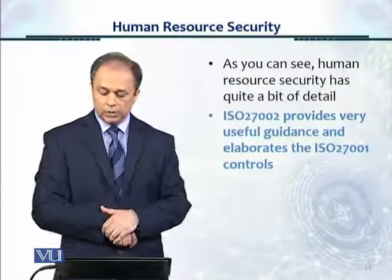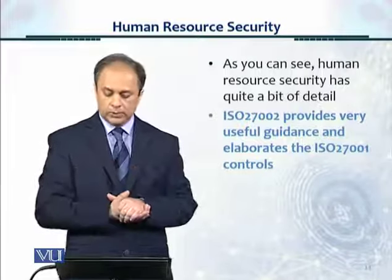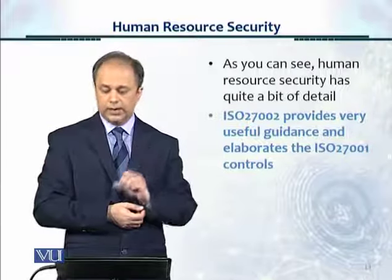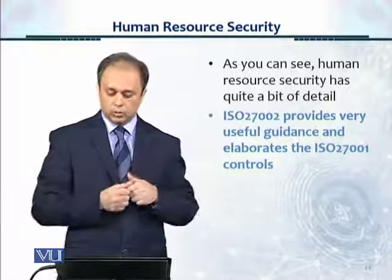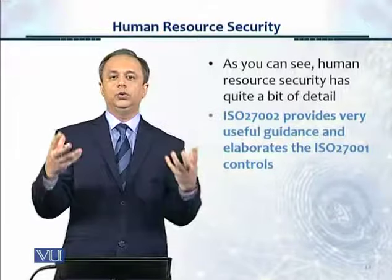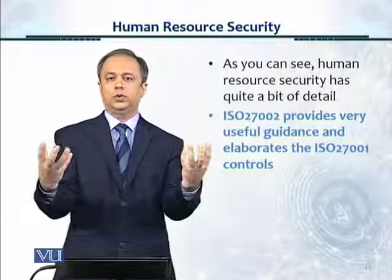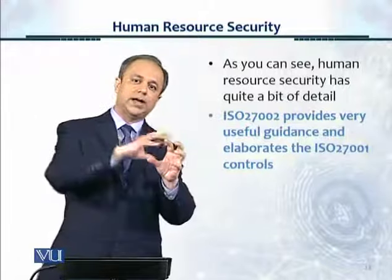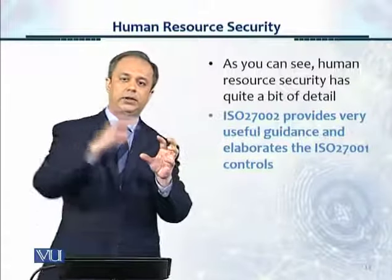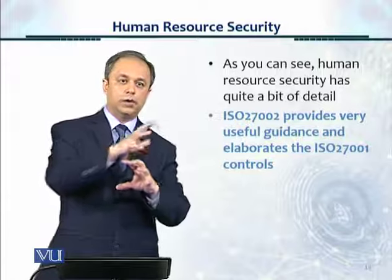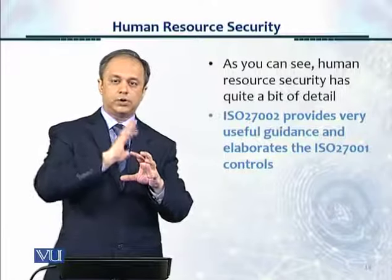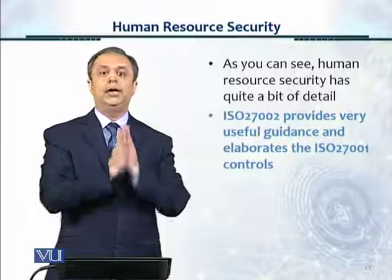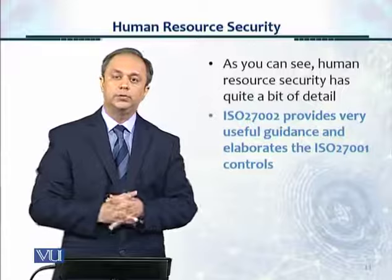As you can see, human resource security has quite a bit of detail, and 27002, as we saw in this module, gives great and useful guidance and elaborates the 27001 controls. That's how you use 27001 and 27002 together. 27002 gives you all the guidance, detail, context, and tips on how you can implement 27001, because 27001 is the certifiable standard but it's very brief, to the point, and generic. That's all that we have for this module. Thank you.